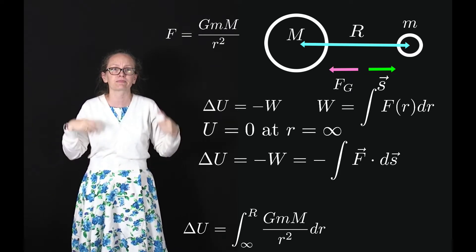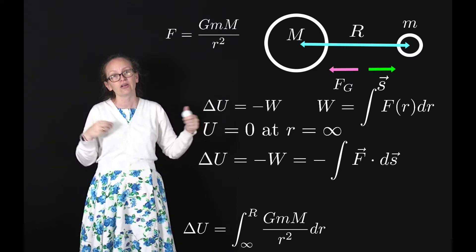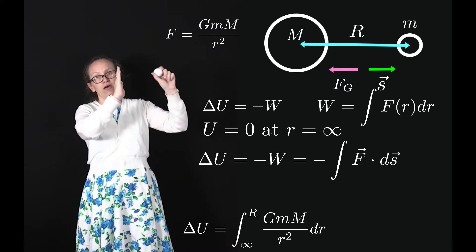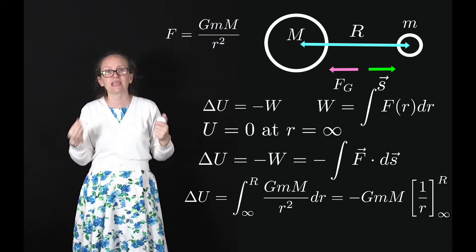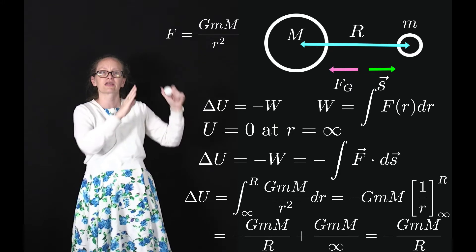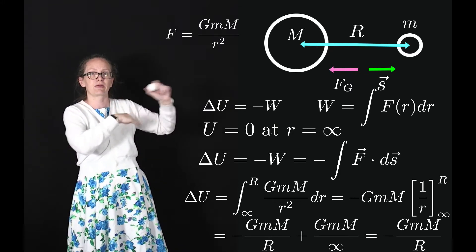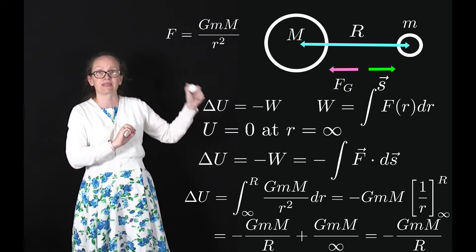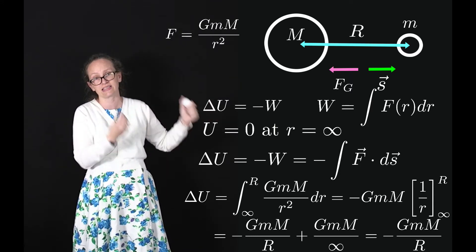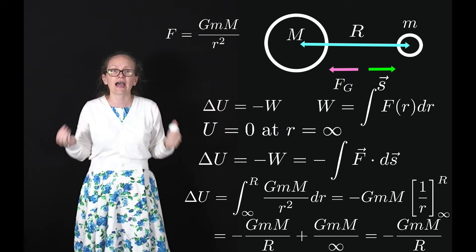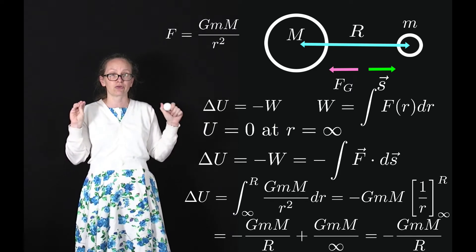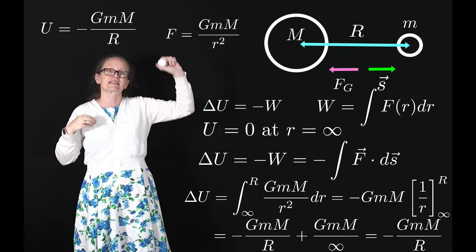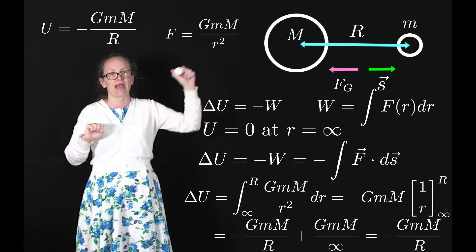Integrating 1 over r squared gives minus 1 over r. So we get minus GMm times 1 over r, evaluated at distance R and at infinity. This gives minus GMm over R plus GMm over infinity. Dividing by infinity gives zero, which is consistent with our convention that potential energy at infinite distance is zero. We now have the equation U equals minus GMm over R to describe the potential energy at any point in space.